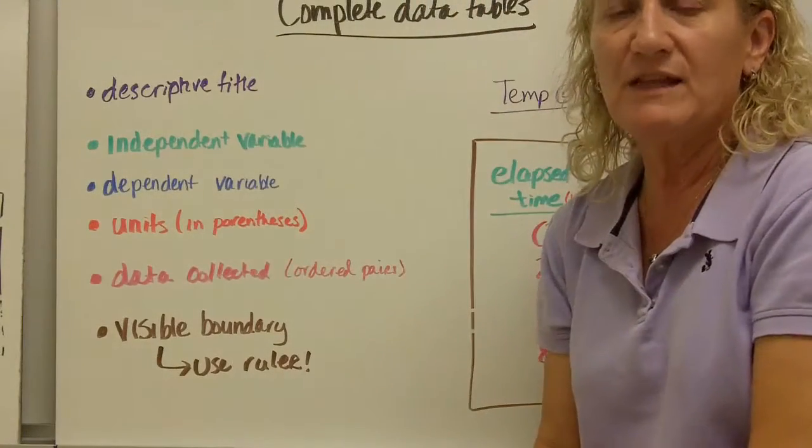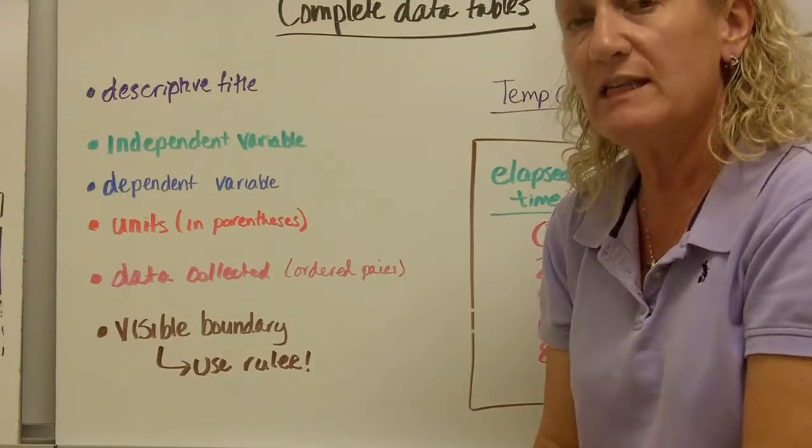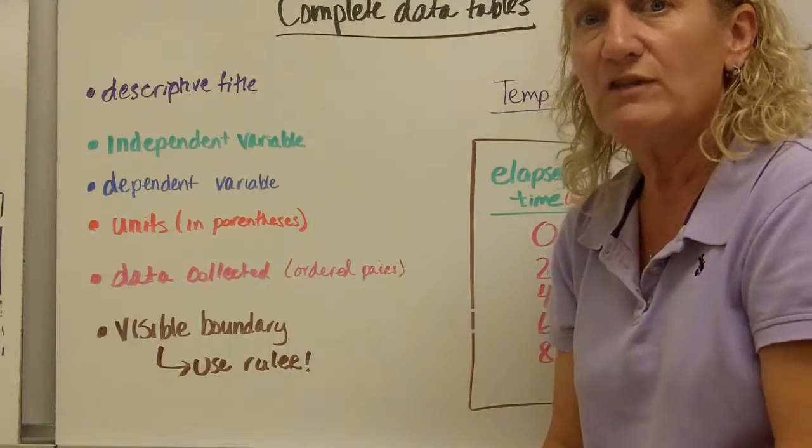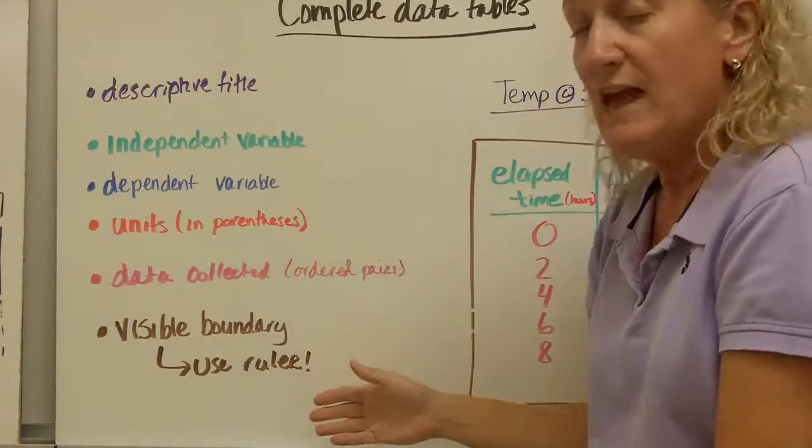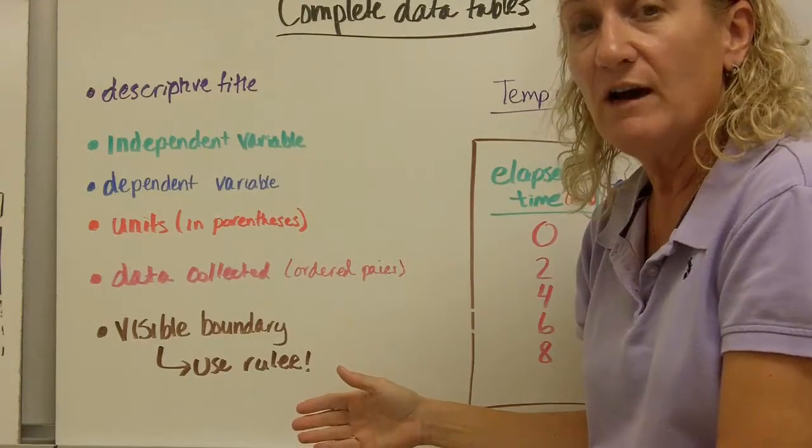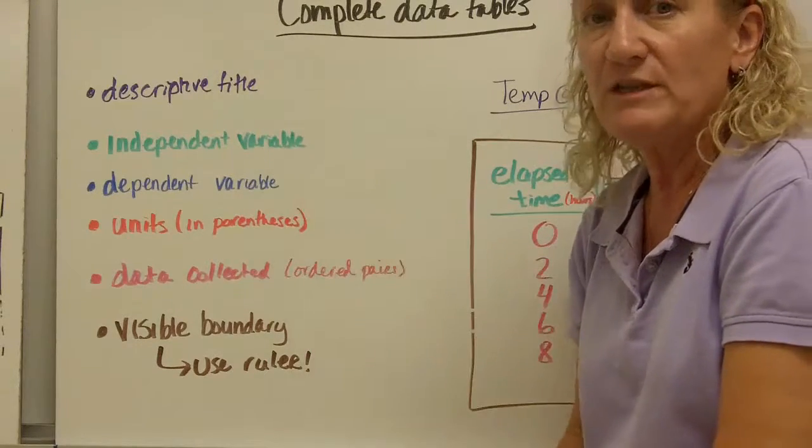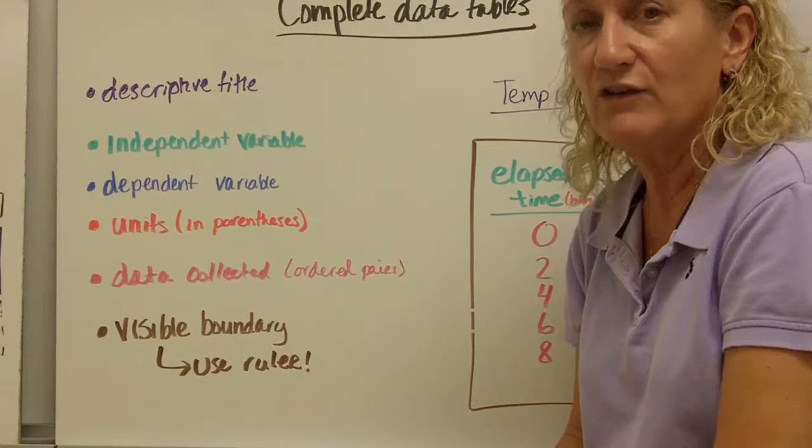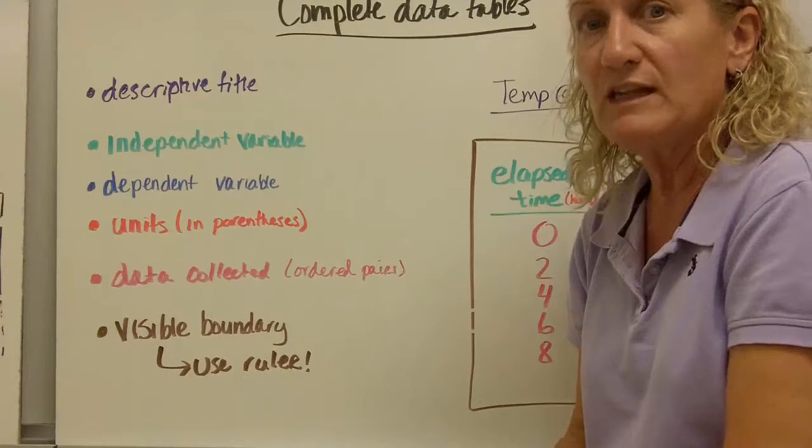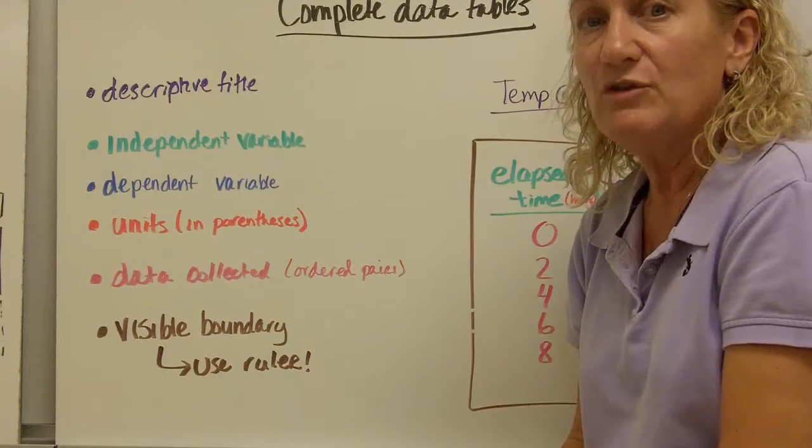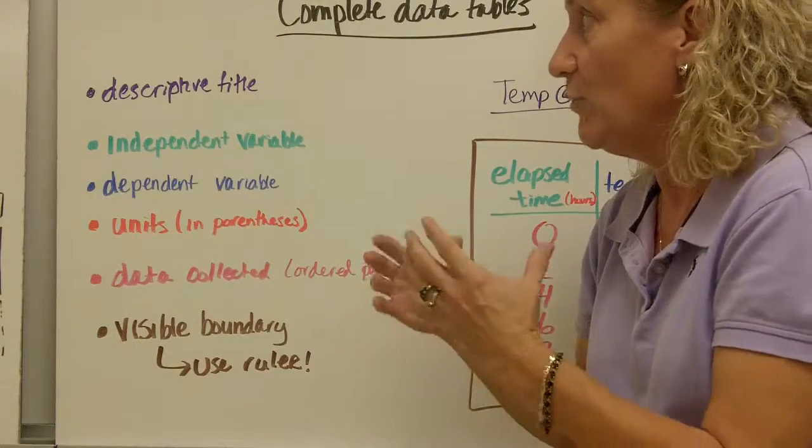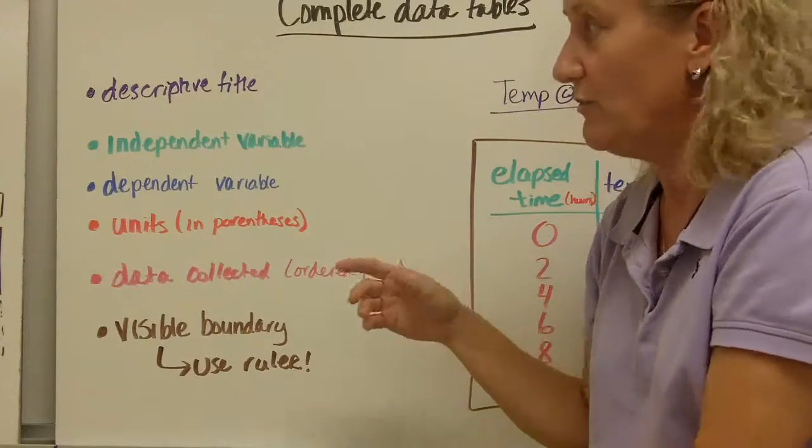Next, we have complete data tables. And that's the last time you're going to hear me say complete data tables. Because from now on, all of your data tables will be complete. They contain a number of pieces. So let's go through them. First, as always, a descriptive title. You're going to get tired of hearing that. But it's really important that at the top of your data table, you tell me what the title is, what it is you're talking about in your graph.